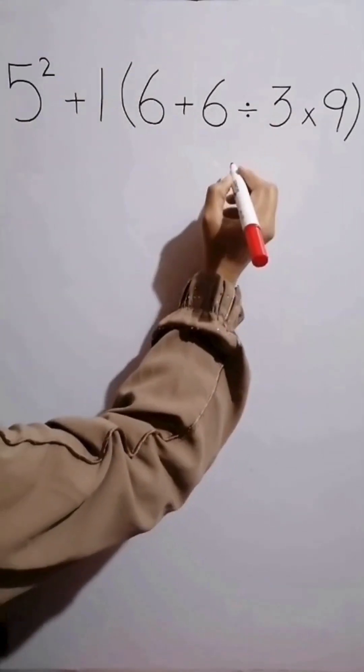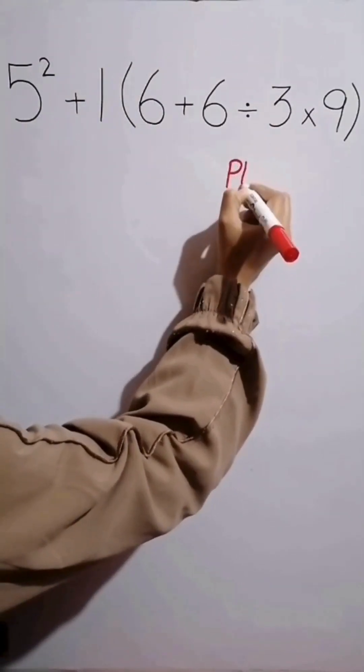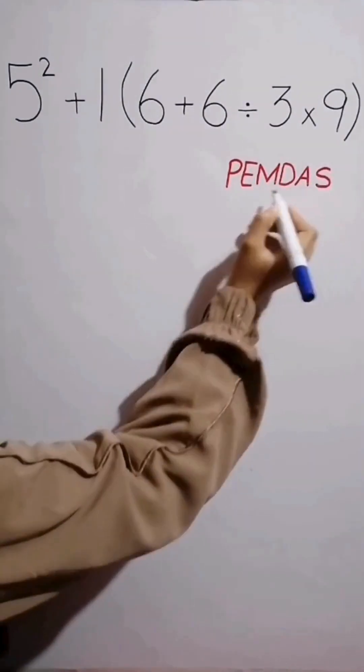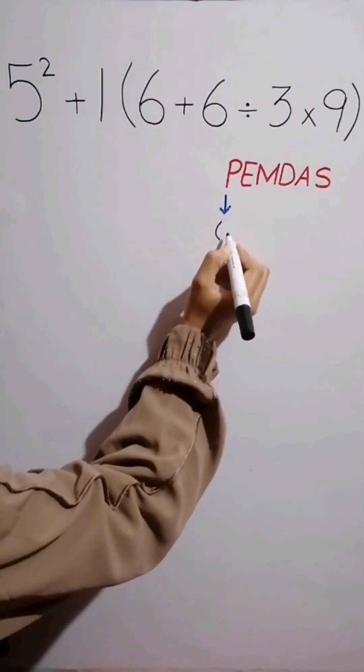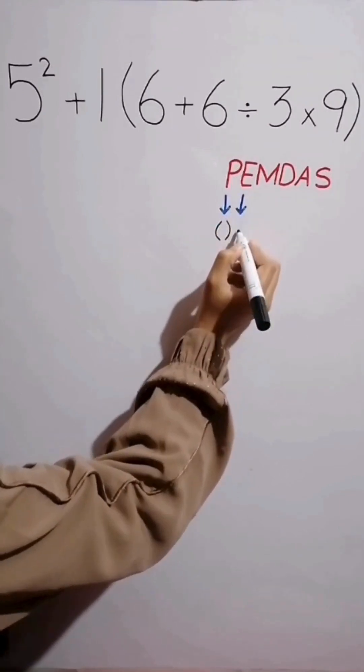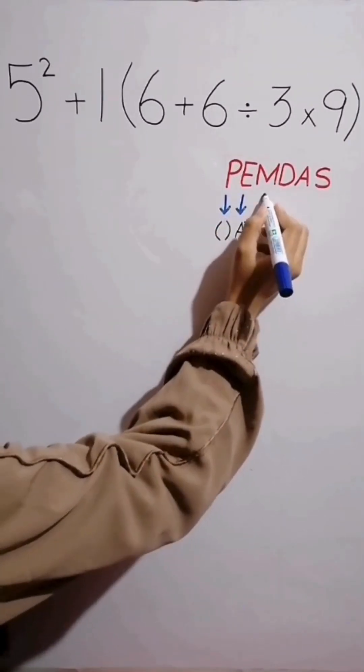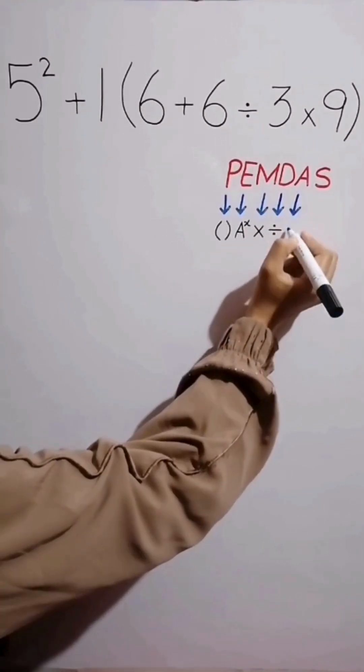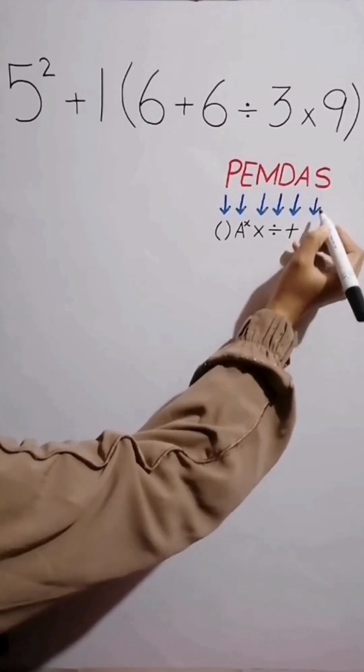To solve this question we need to follow the PEMDAS rule. PEMDAS shows the priority of the mathematical operations. In this rule, P stands for parenthesis, E stands for exponent, M stands for multiplication, D stands for division, A stands for addition, and S stands for subtraction.